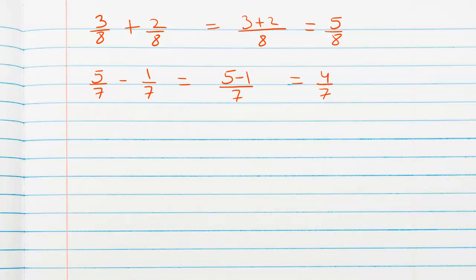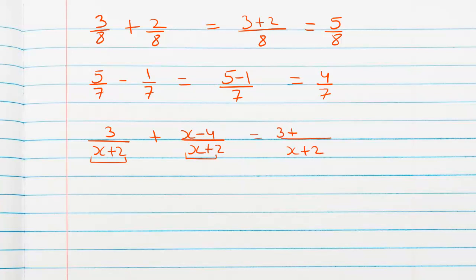In the same way with algebraic expressions, we have 3 over (x+2) plus (x−4) over (x+2). As you can see, x+2 is the common denominator, so we write (3 plus x minus 4) over (x+2). Simplifying the numerator: x plus 3 minus 4 gives x minus 1, so the answer is (x−1) over (x+2).